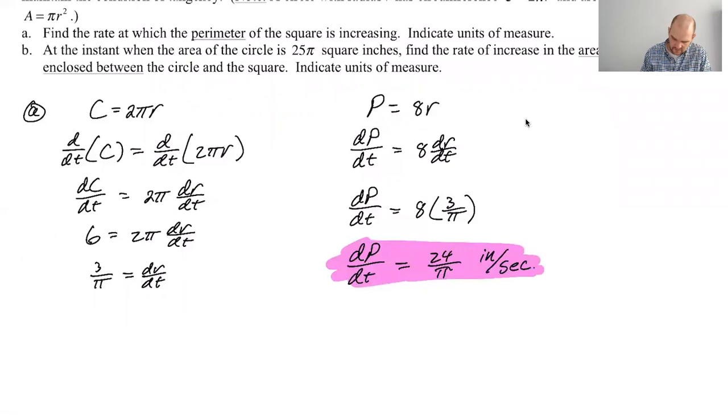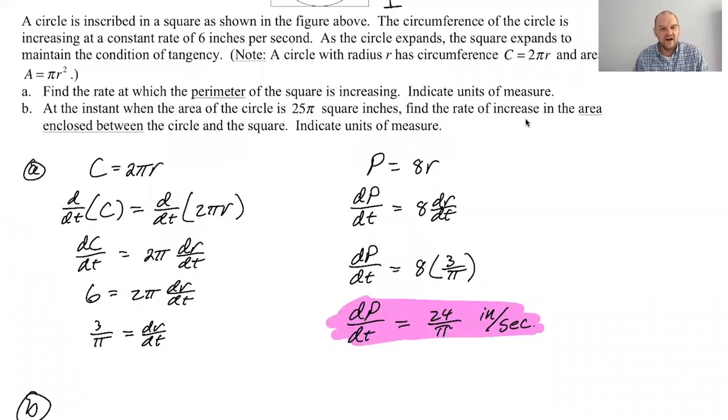We do these basically live, so I don't really know the answers ahead of time. At the instant when the area of the circle is 25π square inches. Okay. So then the radius is 5. Find the rate of increase in the area enclosed between the circle and the square.